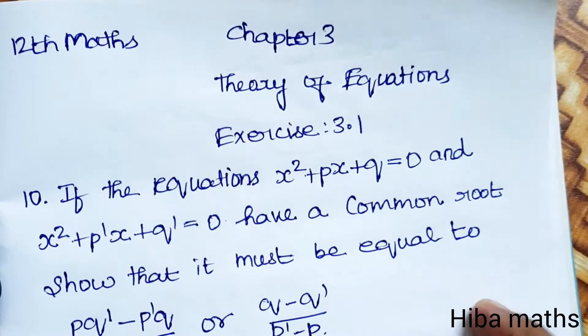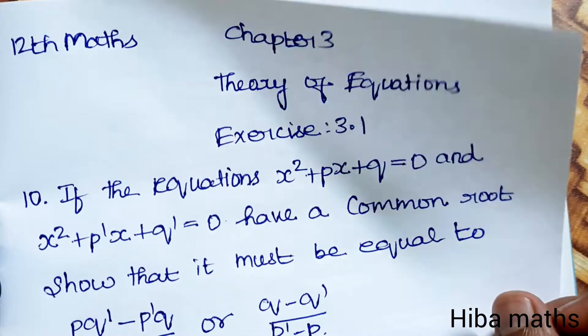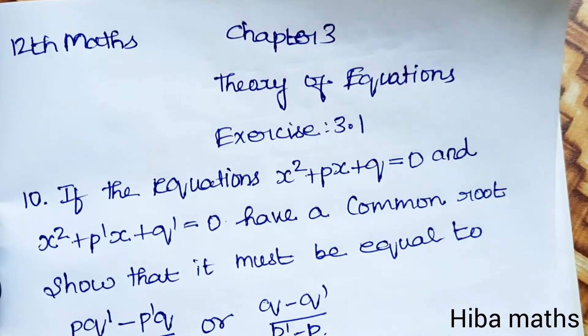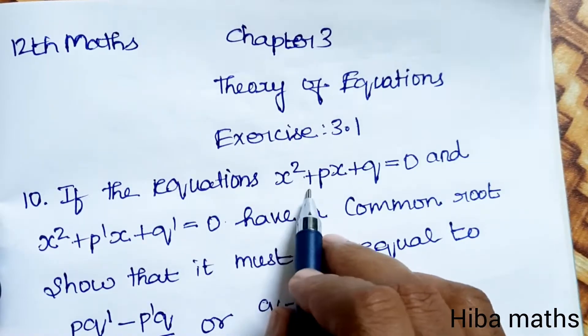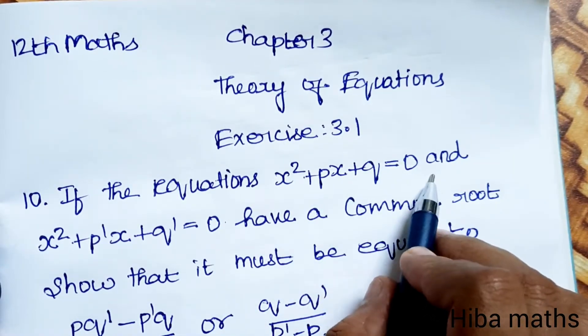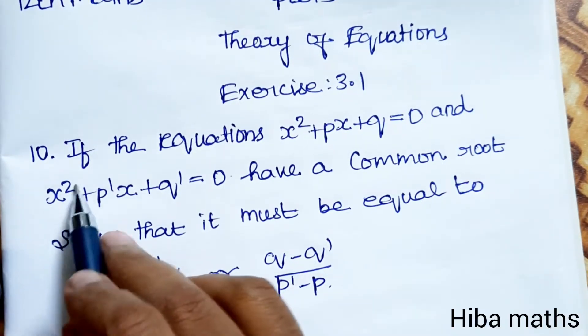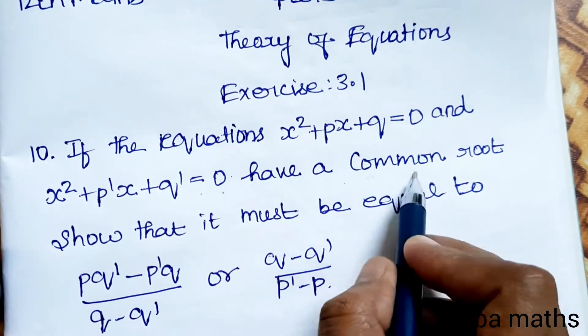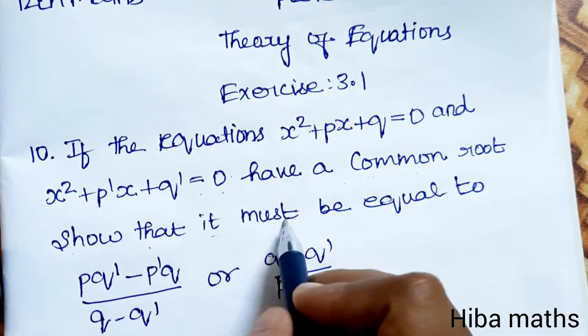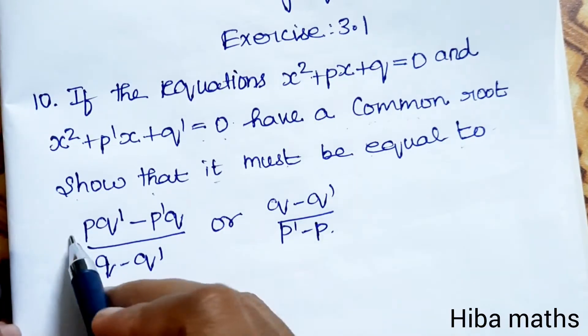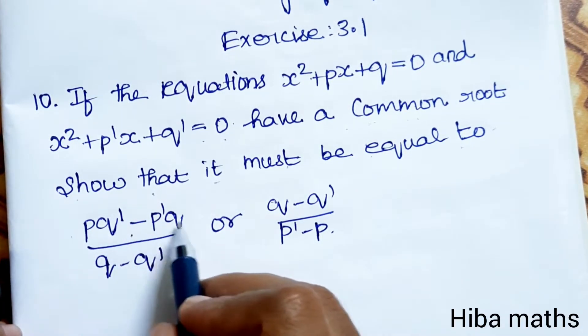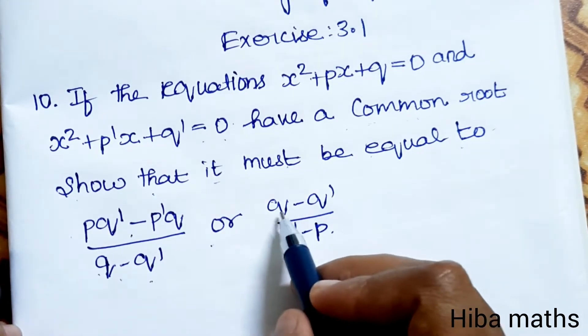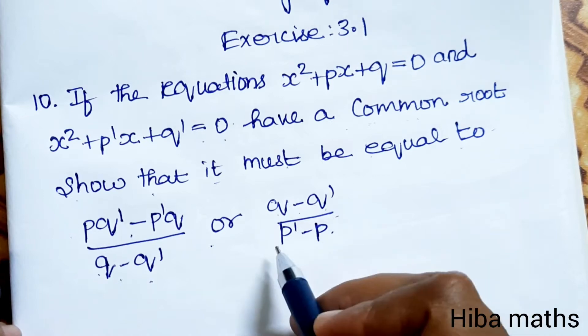Hello students, welcome to Hiba Maths. 12th standard Maths, Chapter 3, Theory of Equations, Exercise 3.1, Question 10. If the equations x² + px + q = 0 and x² + p'x + q' = 0 have a common root, show that it must be equal to (pq' - p'q)/(q - q') or (q - q')/(p' - p).